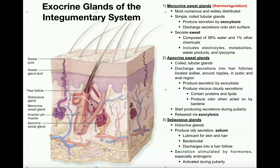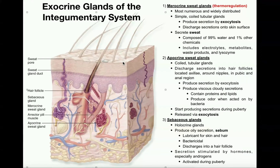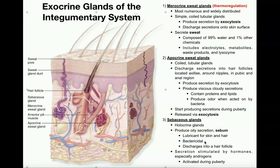The sebum lubricates both the hair and the skin, but these glands do not discharge sebum directly onto the skin surface. Rather, they discharge it into the hair follicle, and it moves up onto the surface of the skin. The sebum is also bactericidal — not only does it lubricate the skin and give it a hydrophobic property, but it also kills bacteria, acting as protection to help prevent pathogen invasion into the underlying tissues.